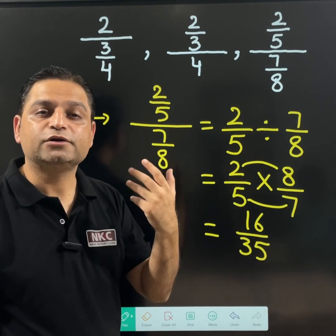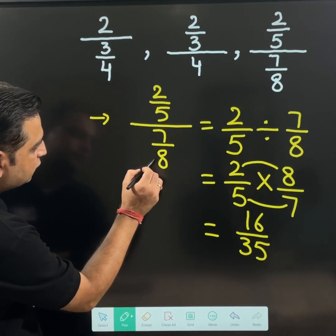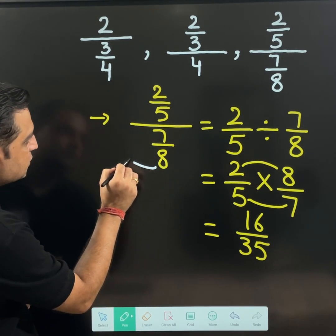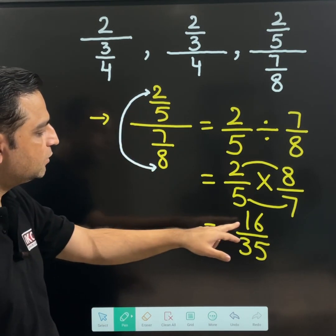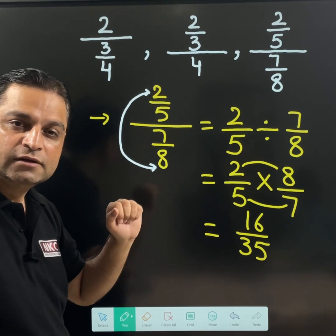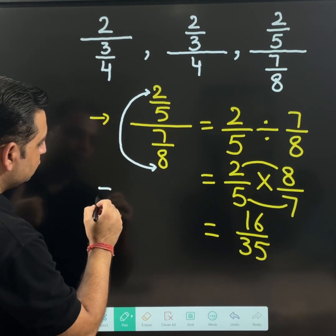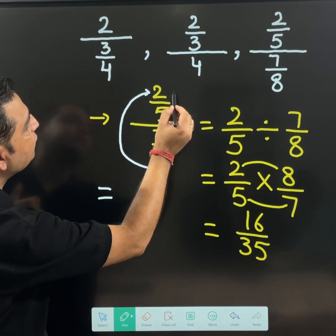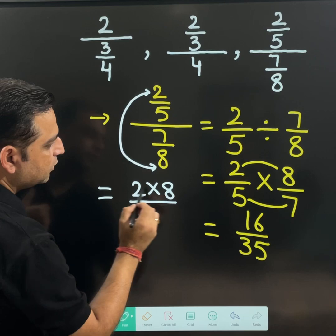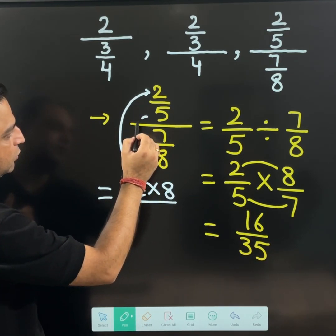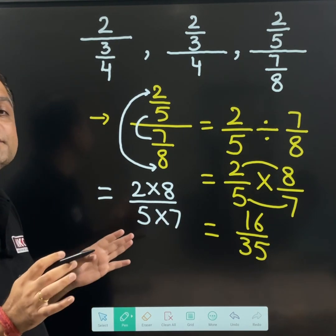But now coming to the shortcut. If you analyze it carefully, this bottom most 8 is multiplied with the top value 2. Right? This 8 and 2 are multiplied, you are getting 16. Why can't we do it as a shortcut? We can multiply the bottom value 8 with the top value 2 directly and see, 5 and 7 were multiplied with the middle 2.